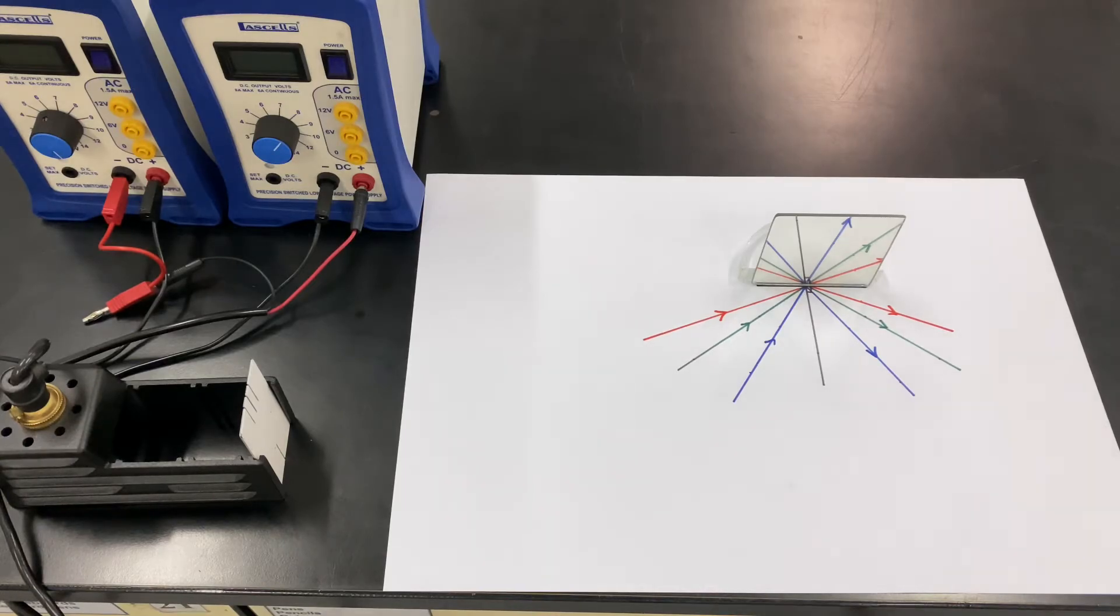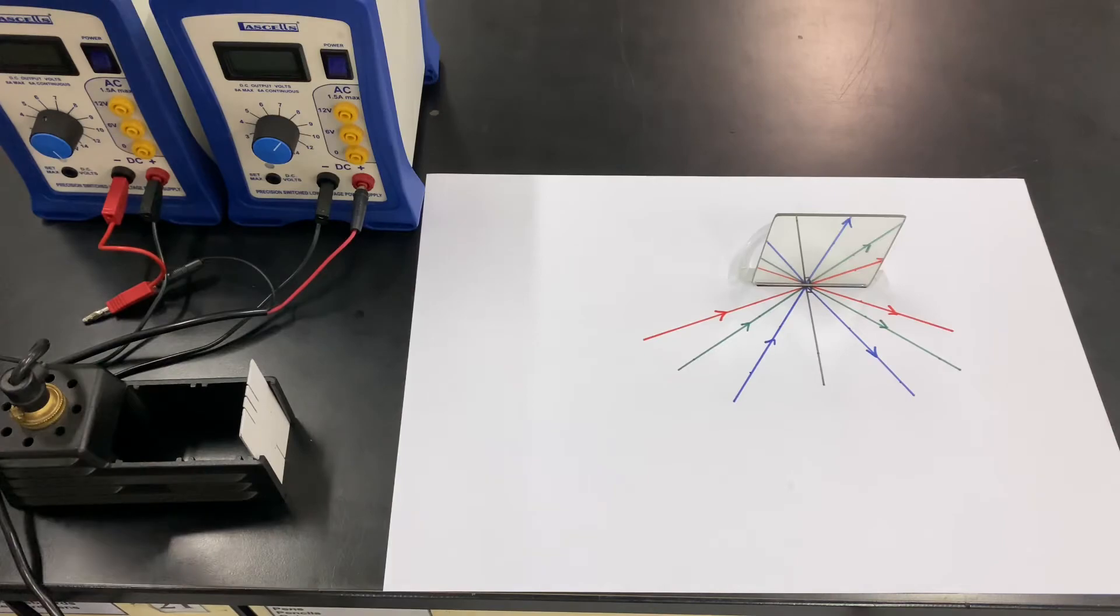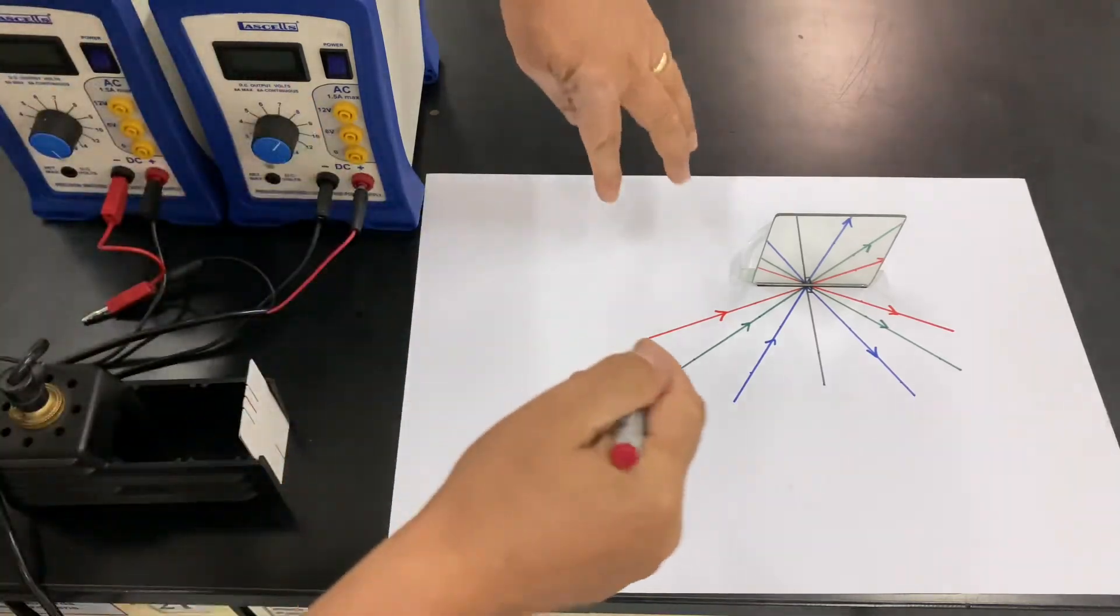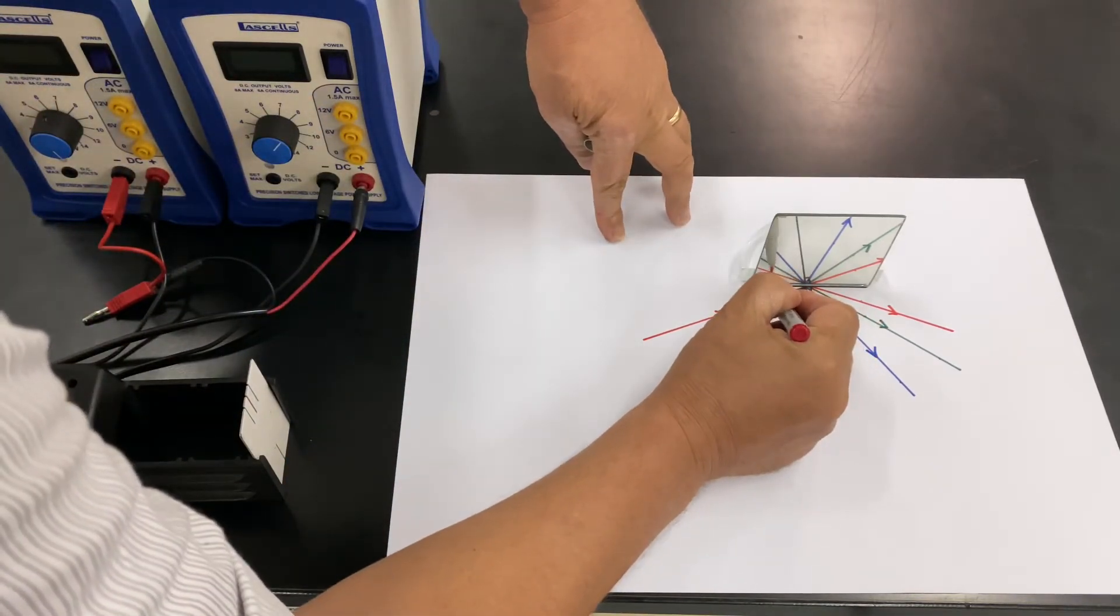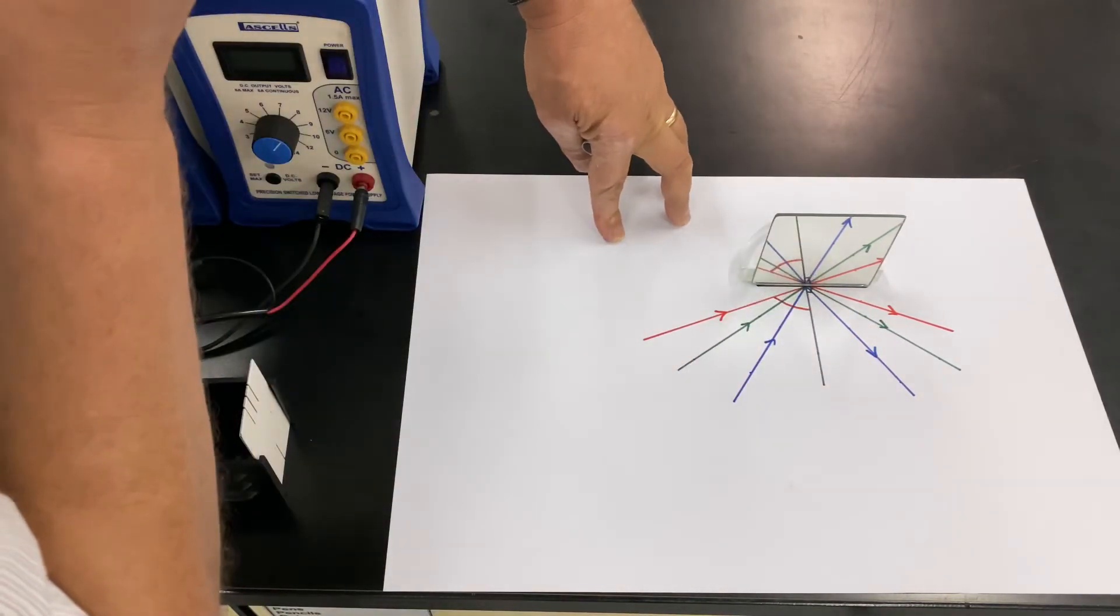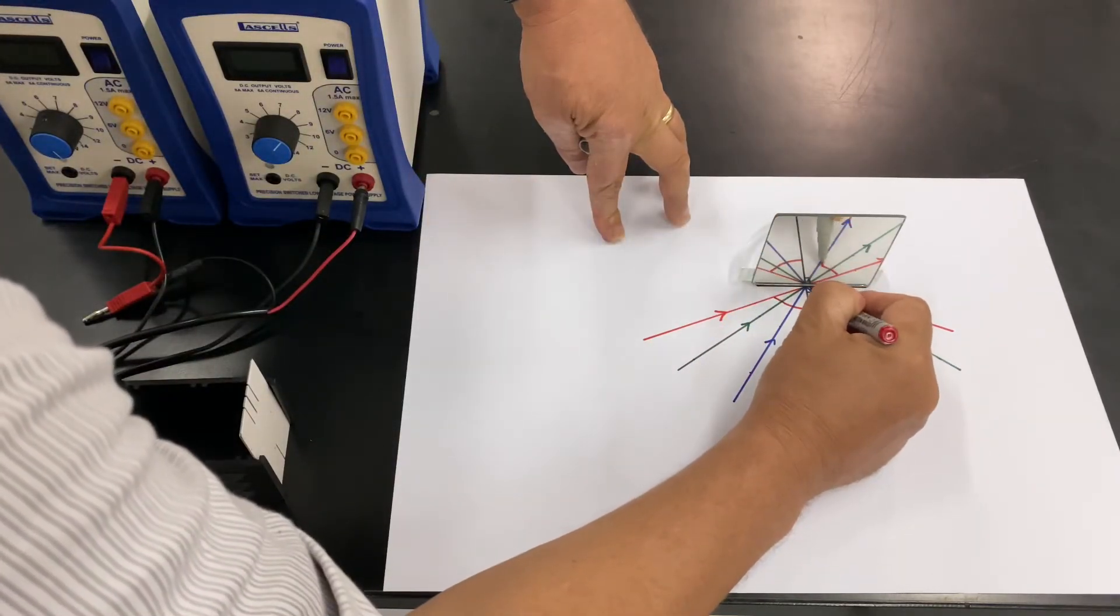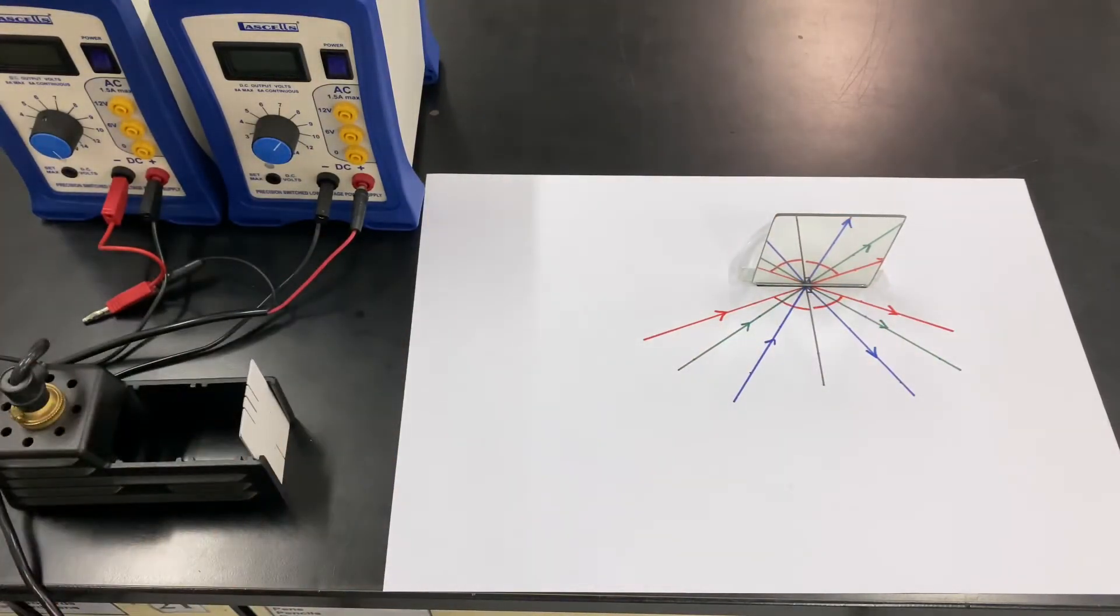Right, the angle of incidence and the angle of reflection are the angles—well the angle of incidence is the angle between the incident ray and the normal. It's always the angle between the ray and the normal. So for our first one, for the red ray, for red, we've got this one here. This is our angle of incidence, this is our angle of reflection.